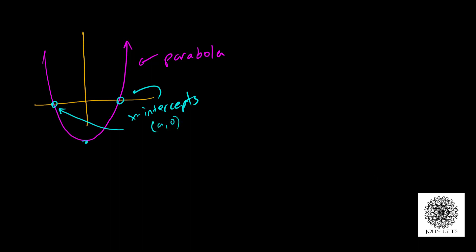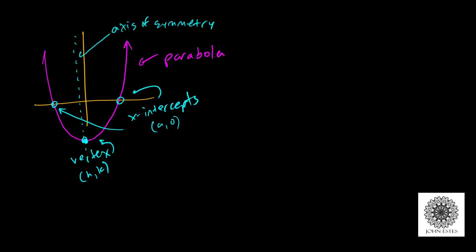We also have the sharp end or the bend — we call this our vertex. It's standard to write the vertex as a coordinate (h, k), meaning the vertex has x-coordinate h and y-coordinate k. The vertical line passing through the vertex divides the parabola in half — it looks the same on both sides. We call this our axis of symmetry. We'll see a nice axis of symmetry in Desmos.